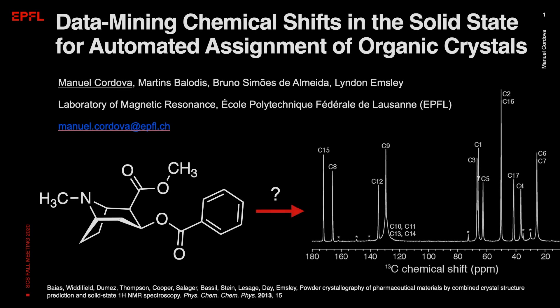Chemical shift assignment is the first step towards the determination of crystal structures through NMR crystallography. Obtaining a confident assignment is much harder for solid-state compounds than for dissolved molecules, and may require lengthy NMR experiments.